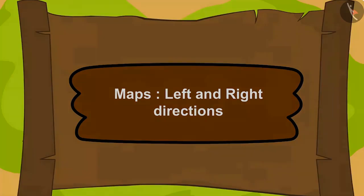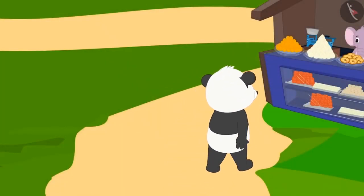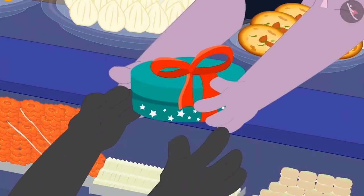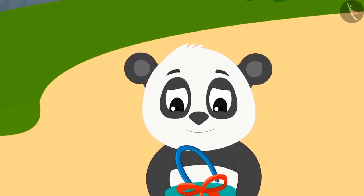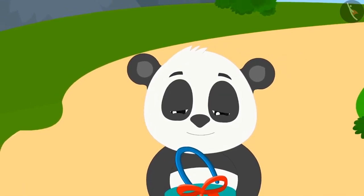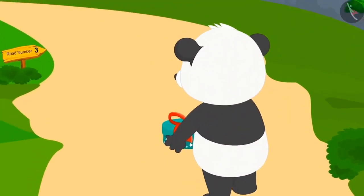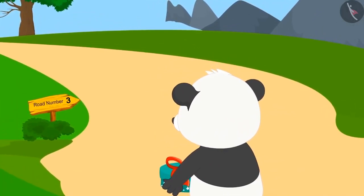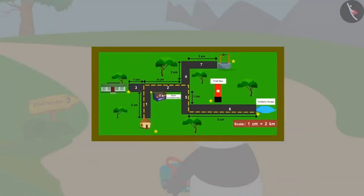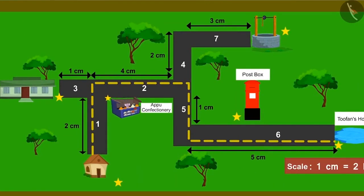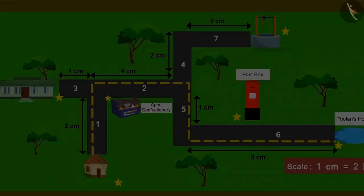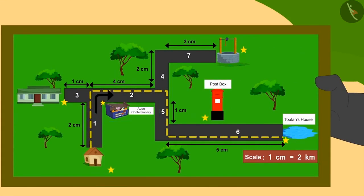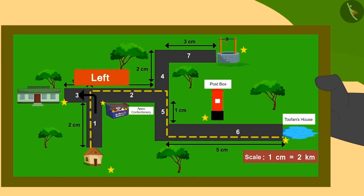In the previous lesson, Golu had bought sweets for Tufan from Appu's confectionery. Now, Golu again started with his journey. After going some distance, he saw the board of road number 3 on the road. He was shocked. According to Uncle's map, he should have been on road number 2. So, where did Golu make a mistake this time? Golu was to go right on road number 2 from Appu's confectionery, but he took a left turn from Appu's shop, which was road number 3.